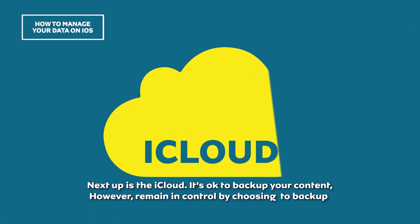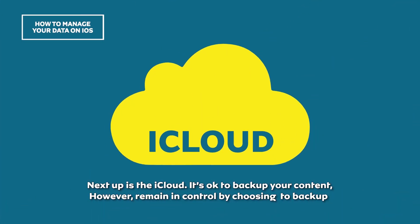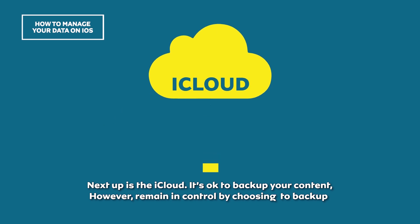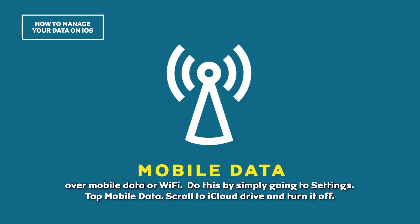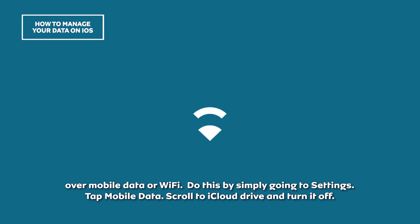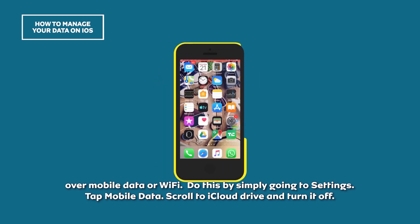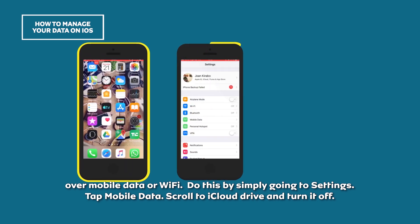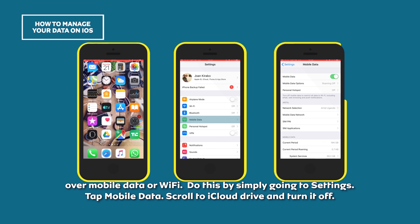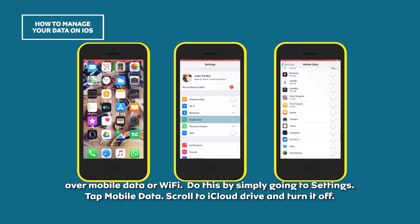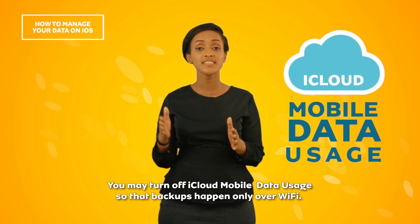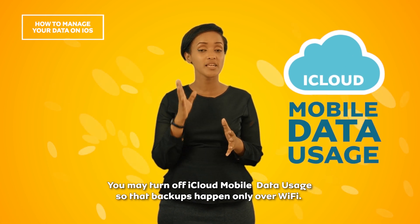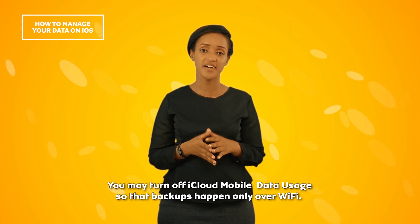Next up is iCloud. It's okay to back up your content and settings. However, remain in control by choosing to back up over mobile data or Wi-Fi. Do this by simply going to Settings, tap Mobile Data, scroll to iCloud Drive, and turn it off. You may turn off iCloud mobile data usage so that backups happen only over Wi-Fi.